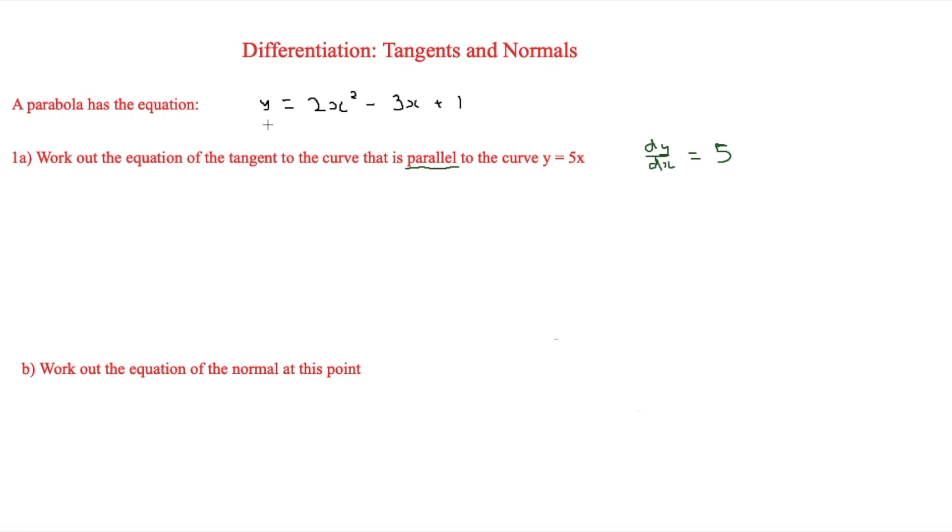Now that means that we can work out what x is by doing dy/dx of this here. So if we do dy/dx of this here, we have 4x minus 3, and that is equal to 5. Now if we rearrange this, we can find that x is equal to 2.